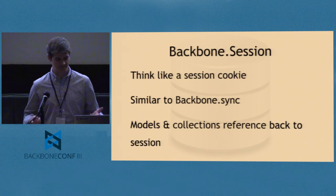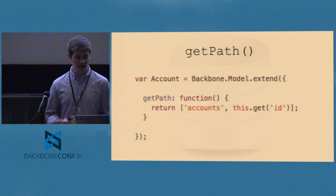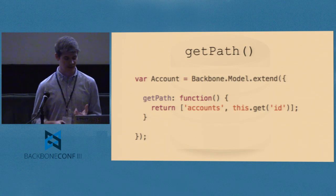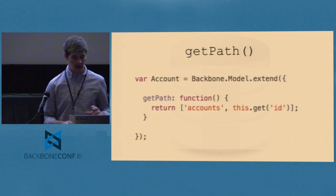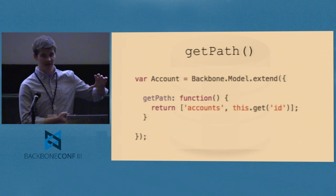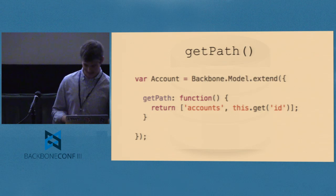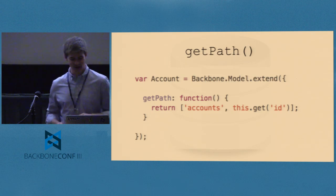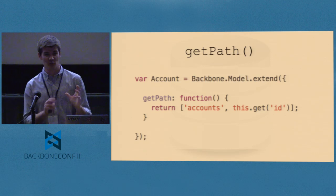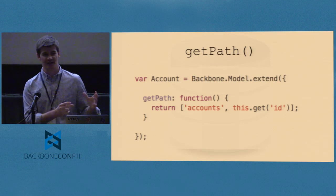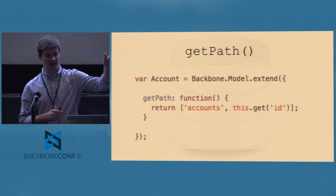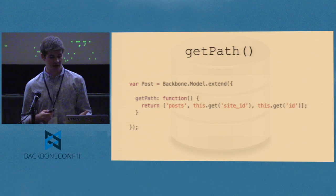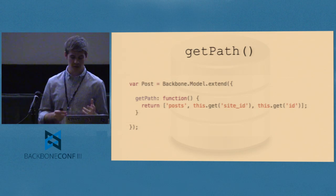We have a get path method. Similar to how a URL defines a universal resource locator for which endpoint is being hit, the get path returns into this root data store where the attributes it's referencing actually live. In this case, from the root, it would be 'accounts' and then 'id.' It doesn't have to be flat — you can group things by the indexes that make the most sense.